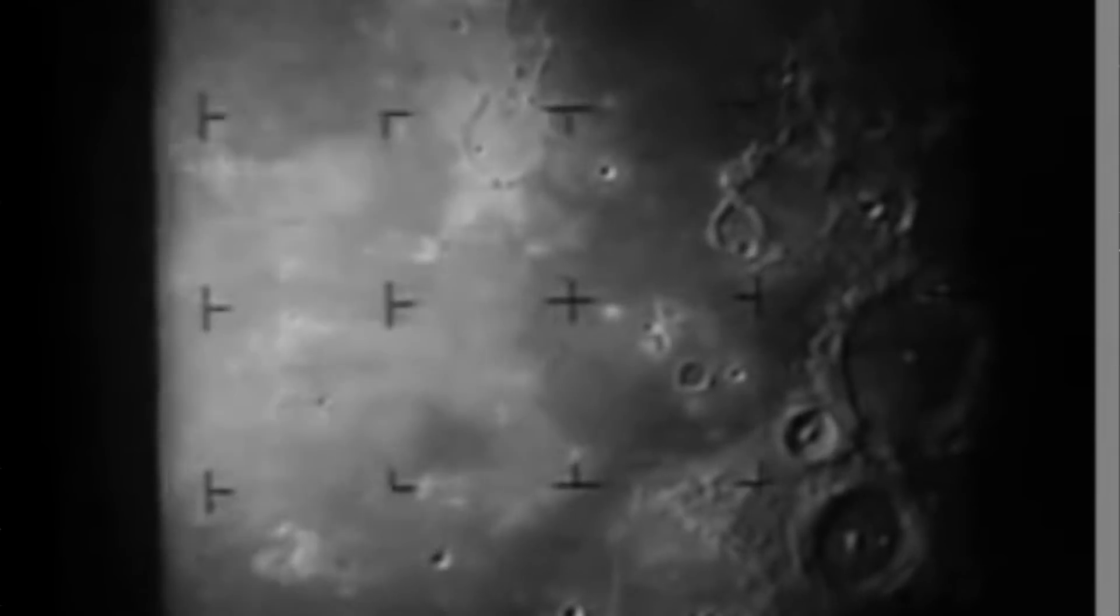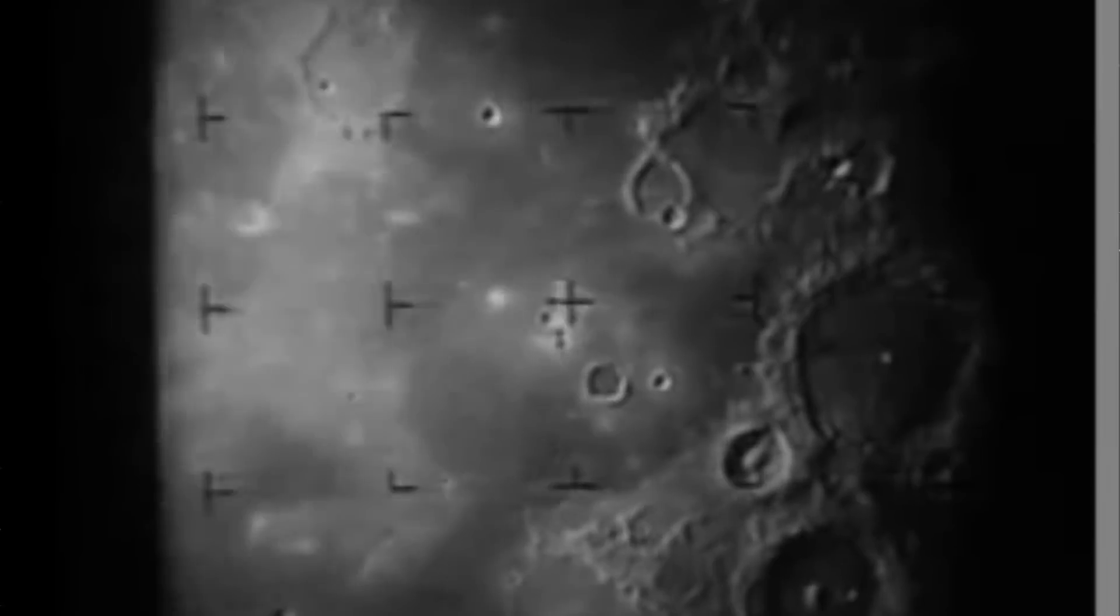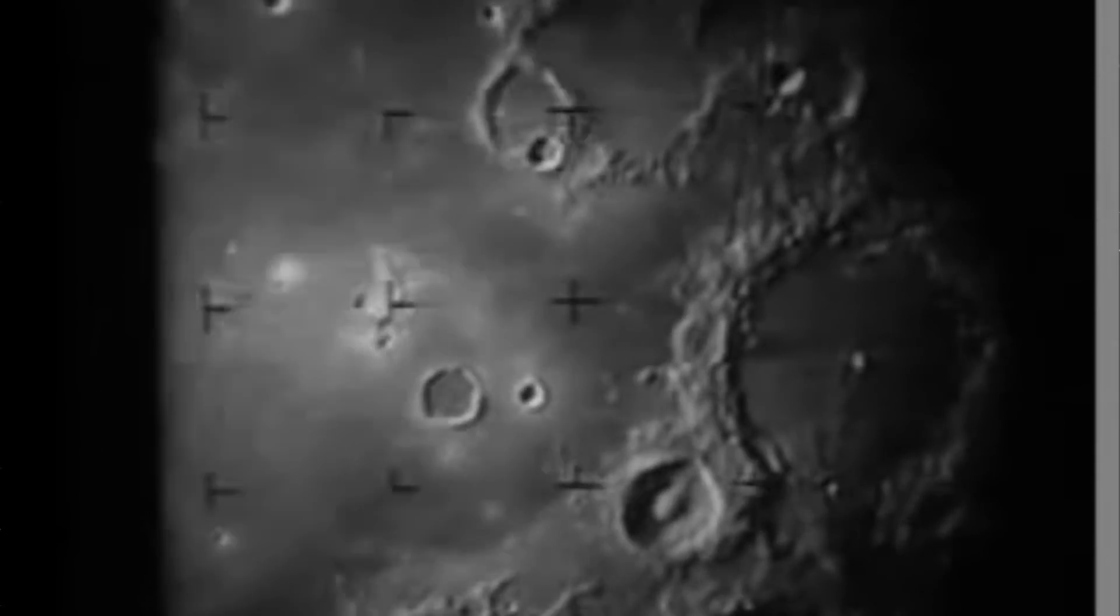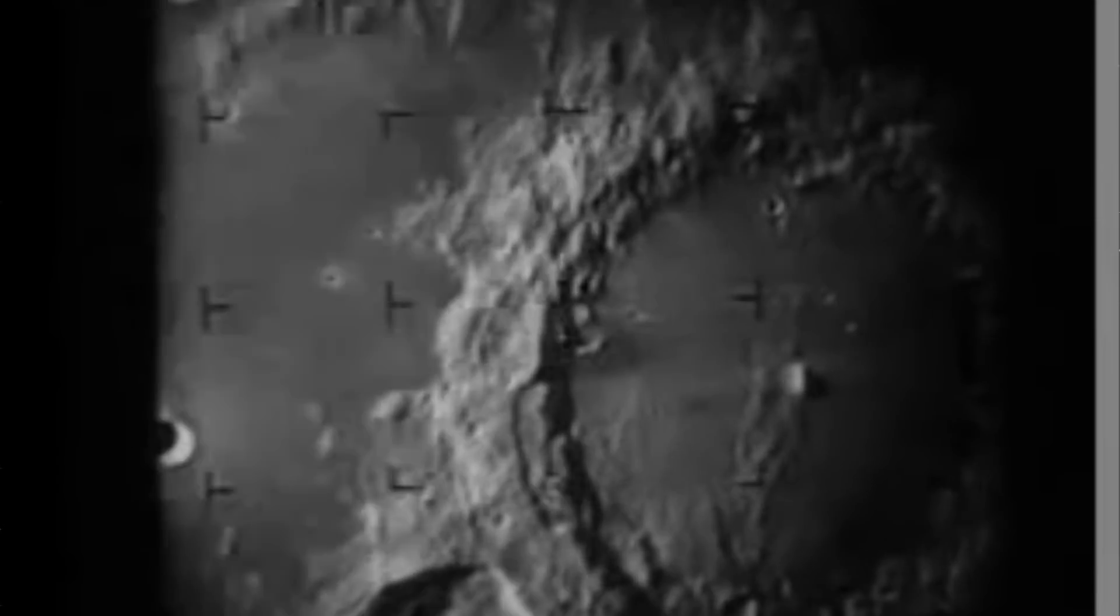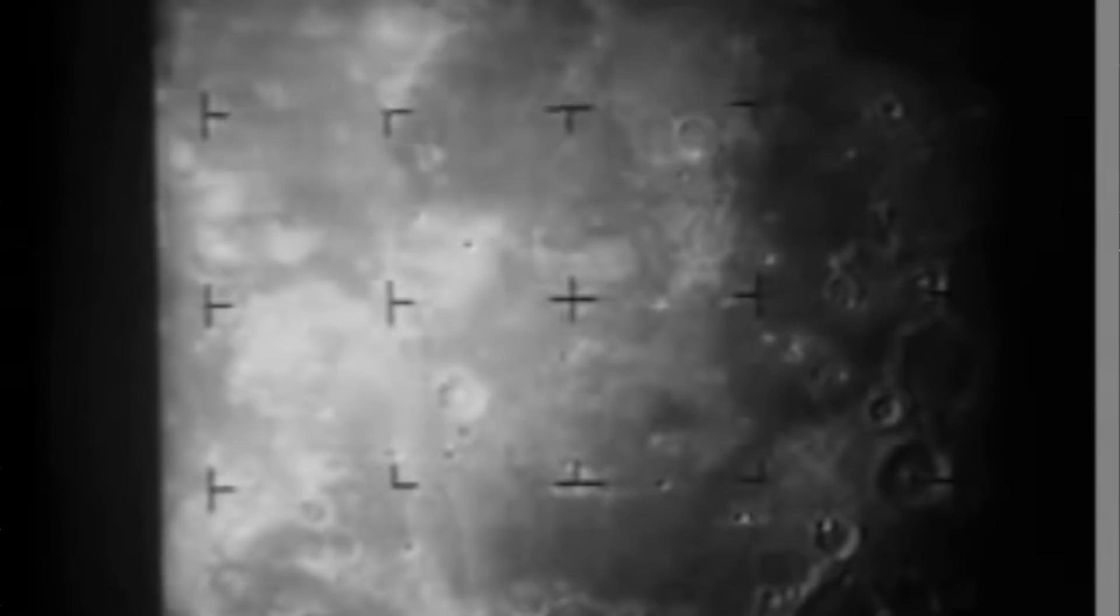Ultimately, the Ranger program really showed that it took a while for JPL to be able to actually succeed in terms of impacting the moon and sending images back. However, once they were successful with Ranger 7, Ranger 8, and Ranger 9, it really helped in the up-and-coming missions of landing spacecraft on the surface of the moon and getting ready for the Apollo landings.